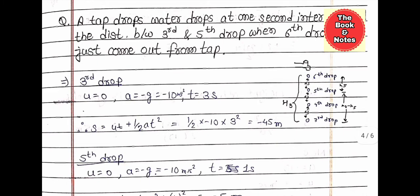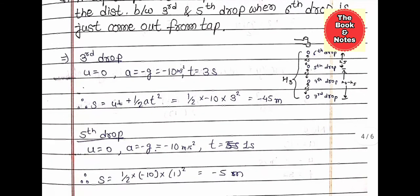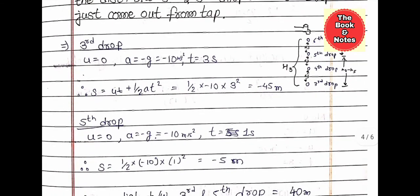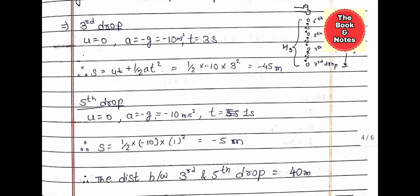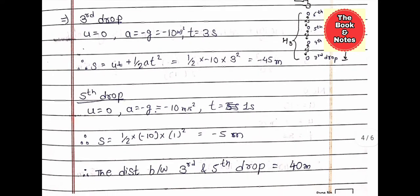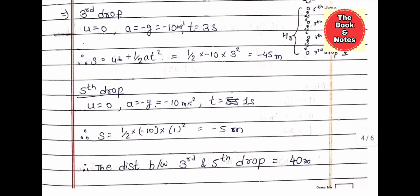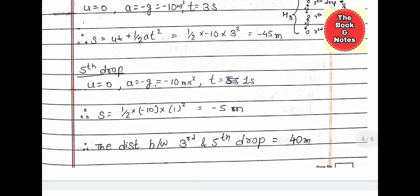The next question: a tap drops water at one-second intervals. Find the distance between the third and fifth drop when the sixth drop has just left the tap. The answer and solution are shown — you can note it or try to solve it yourself. The distance between the third and the fifth drop is 40 meters.